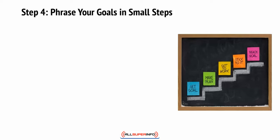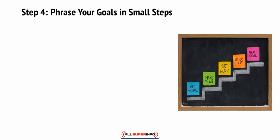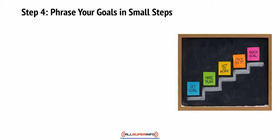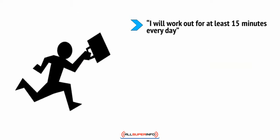Step 4: Phrase your goals in small steps. Now you know what it is you want to achieve and how you want to get there. You know the bigger picture, and it's time to think about the small details instead. You know you want to get fit, you know that going to the gym is not viable for you, and you know that working out from home makes a lot more sense. All that's left is to phrase this as a goal you can focus on every day or week: 'I will work out for at least 15 minutes every day.'